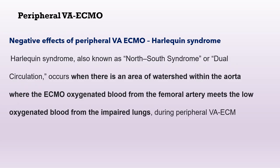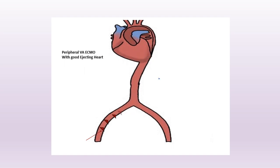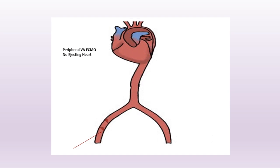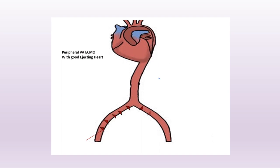The second negative effect of peripheral VA ECMO is Harlequin syndrome, also known as north-south syndrome or dual circulation. Occasionally there is a watershed zone within the aorta where the ECMO-oxygenated blood from the femoral artery meets the less oxygenated blood from the impaired lungs during peripheral VA ECMO. The location of this mixing point, or watershed point, depends on the ejection fraction of the left ventricle — in a severely impaired left ventricle, it will be in the proximal ascending aorta or aortic arch, but as the ventricle regains contraction it moves more distally.